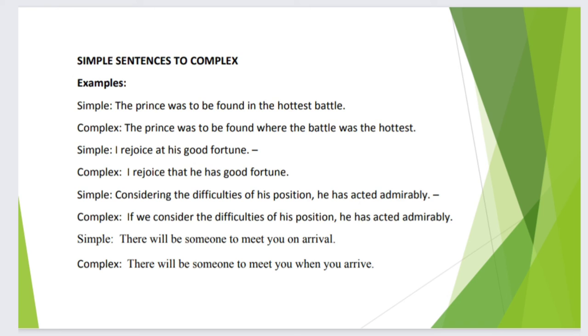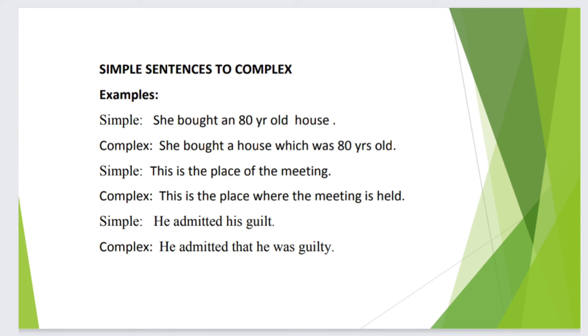More examples: Simple: The prince was to be found in the hottest battle. Complex: The prince was to be found where the battle was the hottest. Simple: He brought an 80-year-old horse. Complex: He brought a horse which was 80 years old. Simple: This is the place of the meeting. Complex: This is the place where the meeting is held.